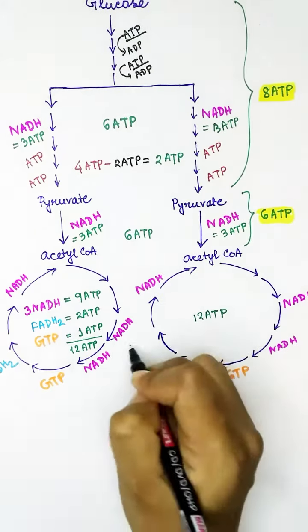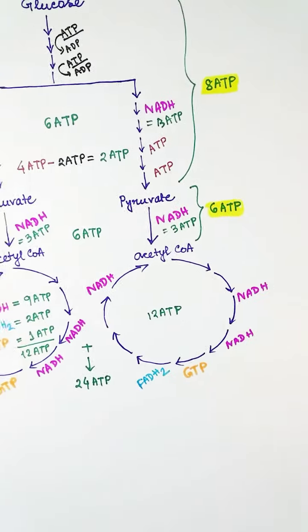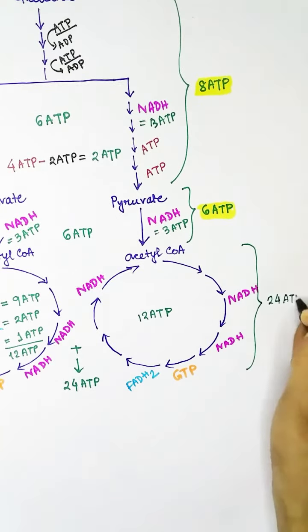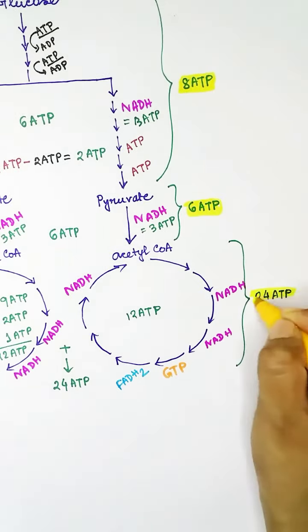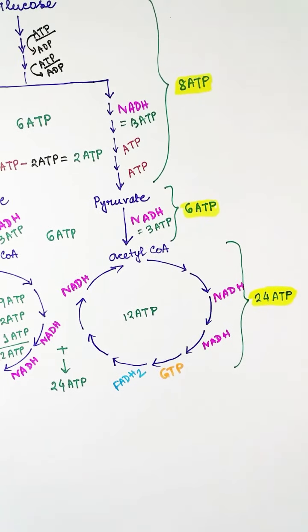So from one glucose we get two Krebs cycles, total 24 ATPs from Krebs cycle from one glucose. So from glycolysis we get eight ATPs, from pyruvate to acetyl-CoA we get six ATPs, and from two Krebs cycles we get 24 ATPs.